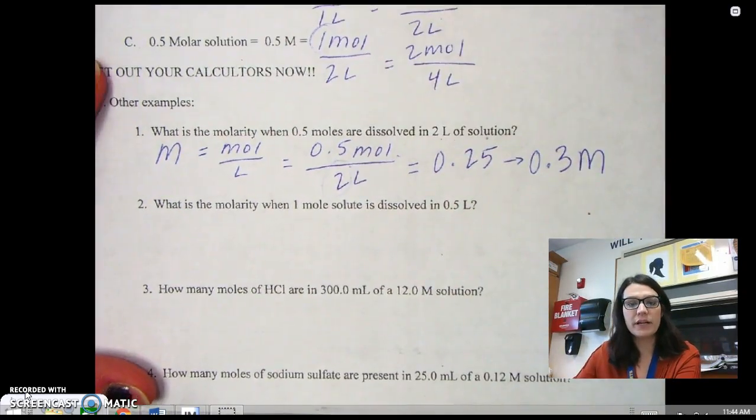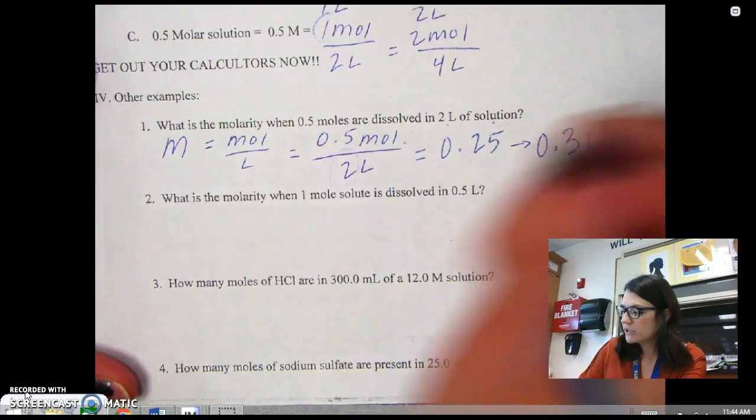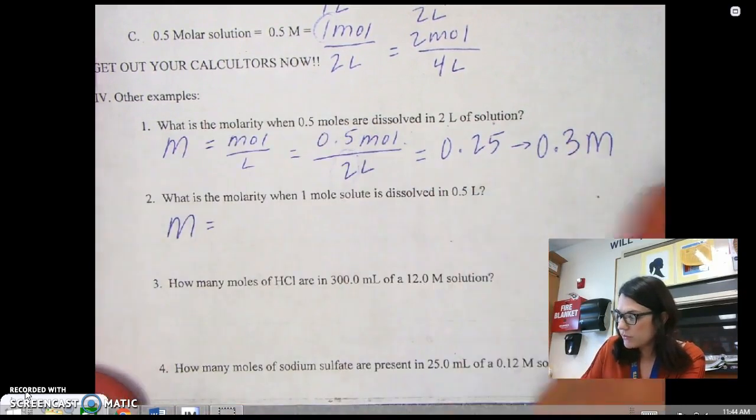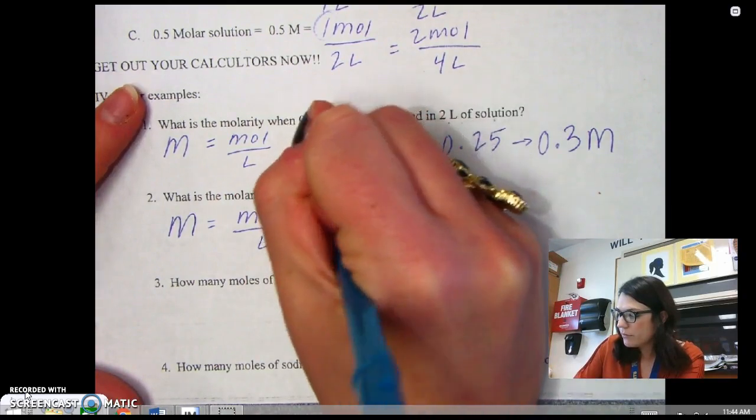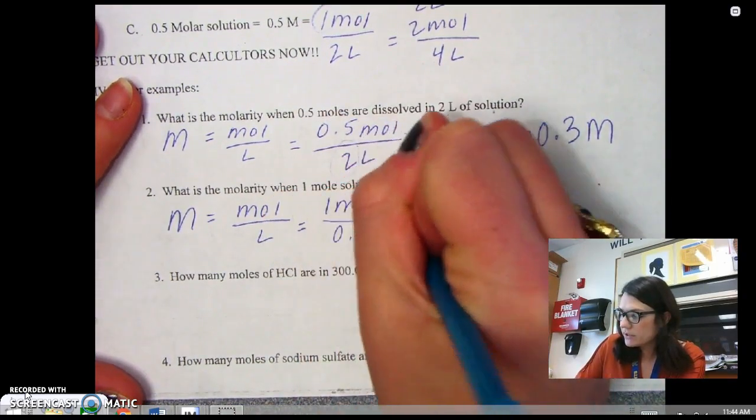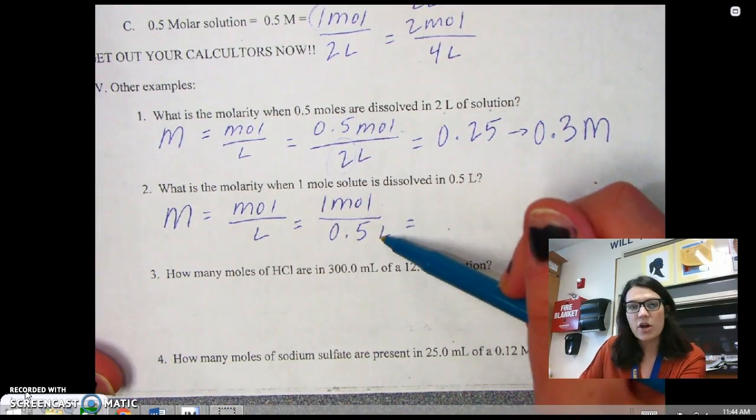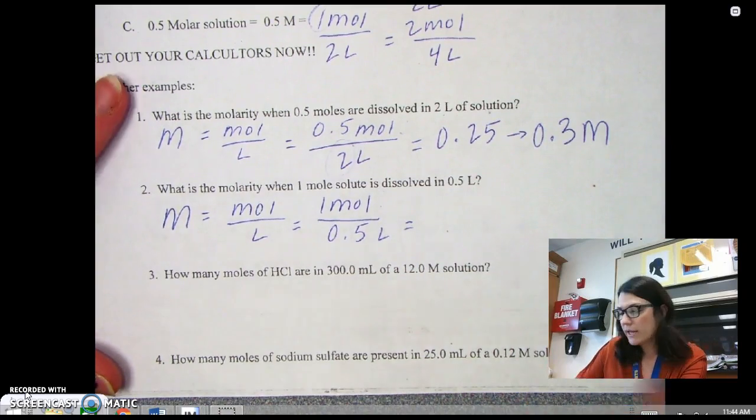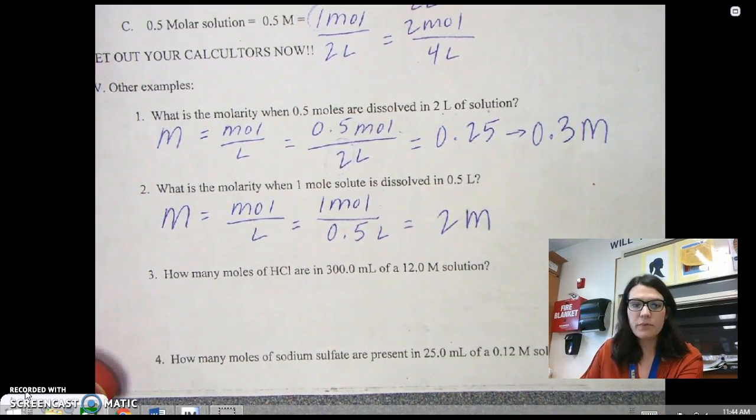What is the molarity when one mole of solute is dissolved in 0.5 liters? So molarity is equal to moles divided by liters, which is equal to, for every one mole, it'll be divided by 0.5 liters. So now this is going to be opposite, so this is bigger than this, so 0.5 goes into one twice, so this would be a two molar solution.